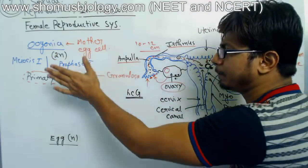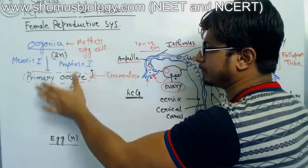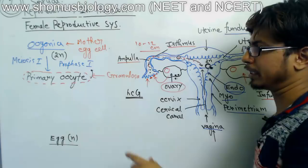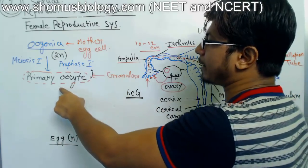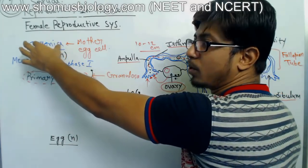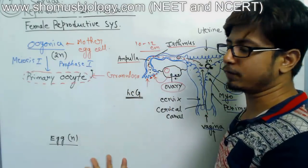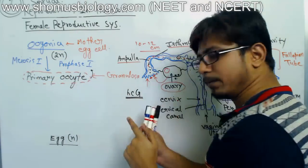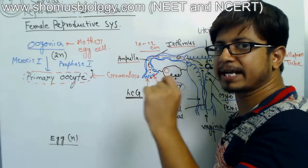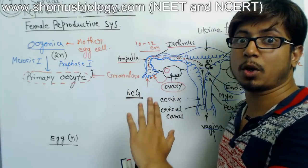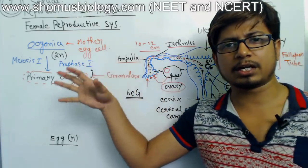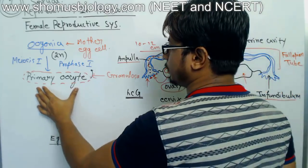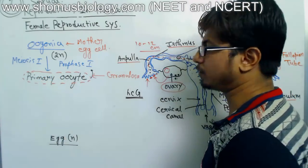From birth until puberty, the total number of primary oocytes decreases because they degenerate. There were approximately 1 million oogonia during fetal development; they slowly convert into primary oocytes, but from birth until puberty the total number of these mother egg cells decreases to only 60,000 to 80,000. A huge number of cells die and degenerate, and no new cells are formed.